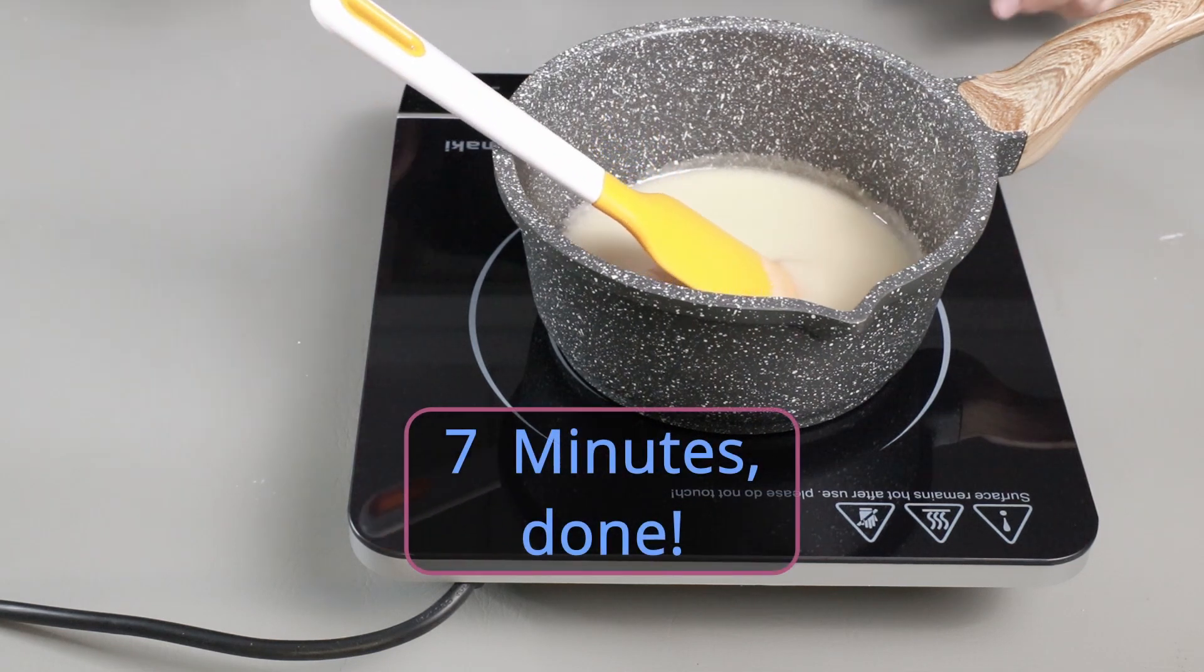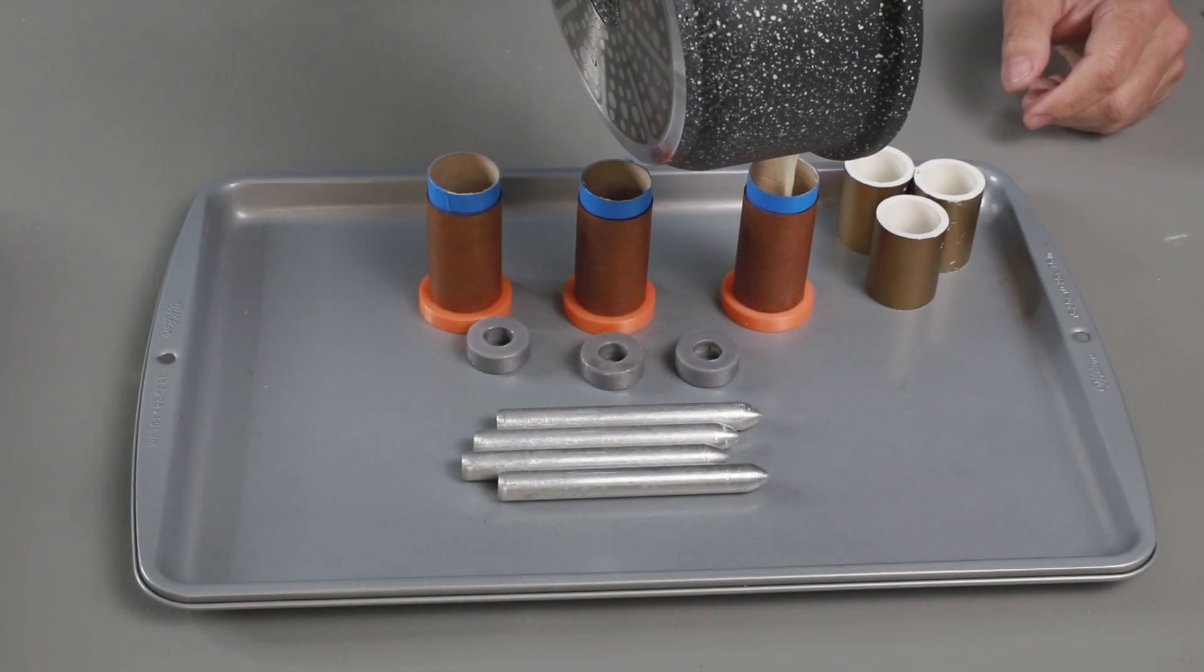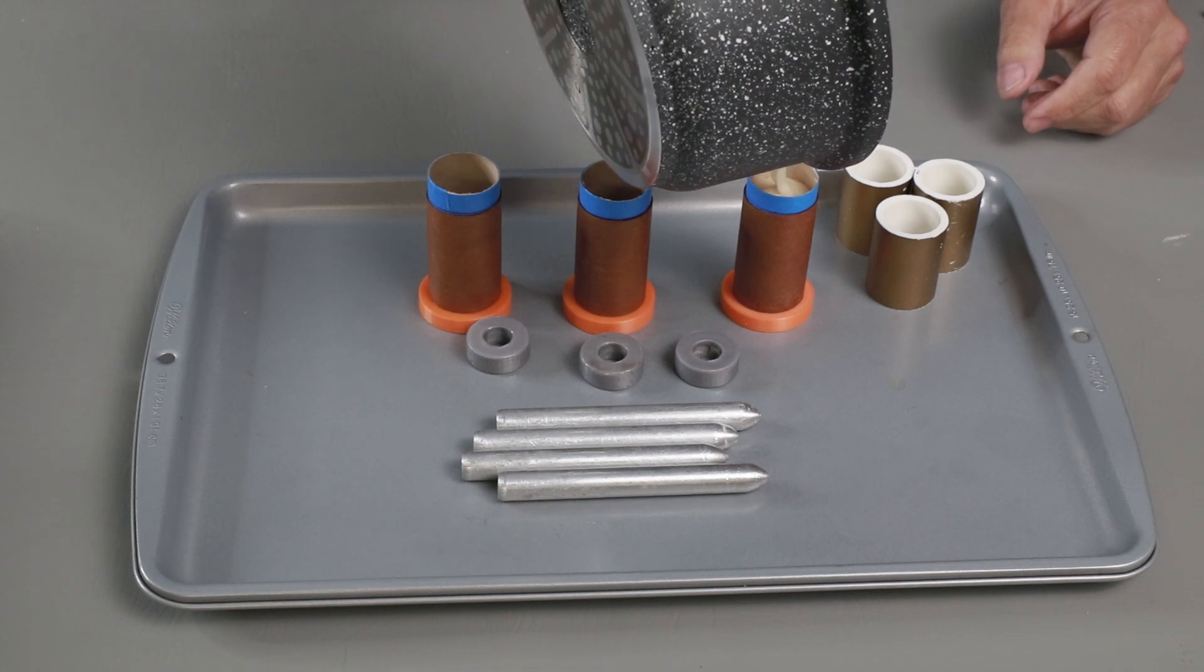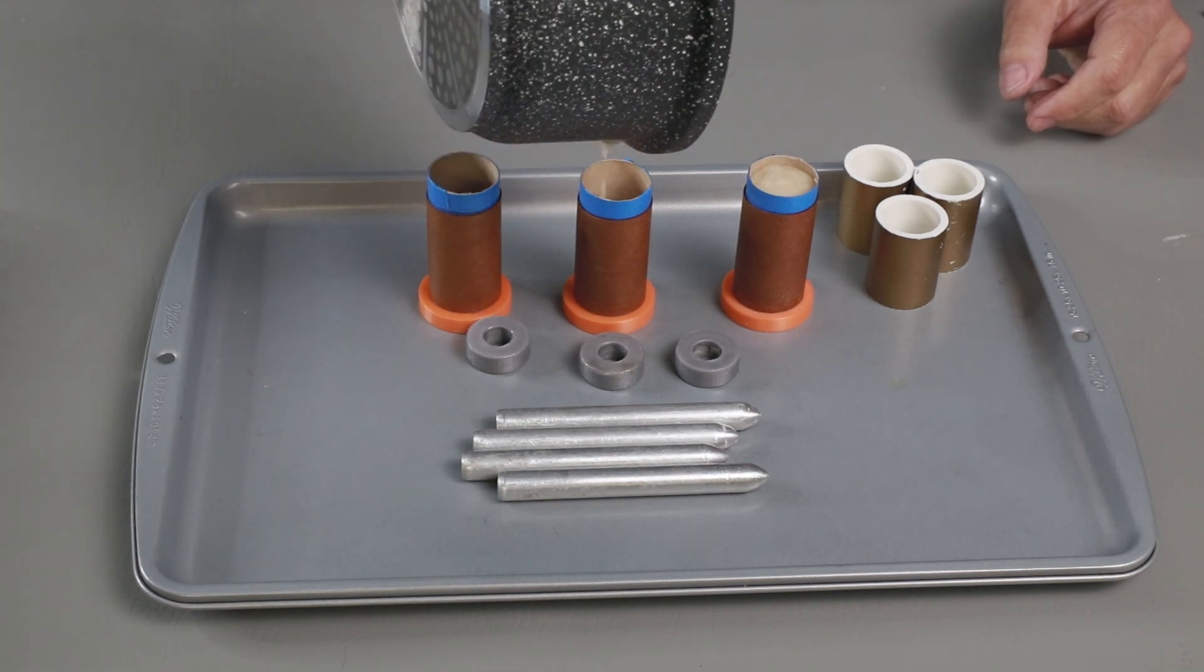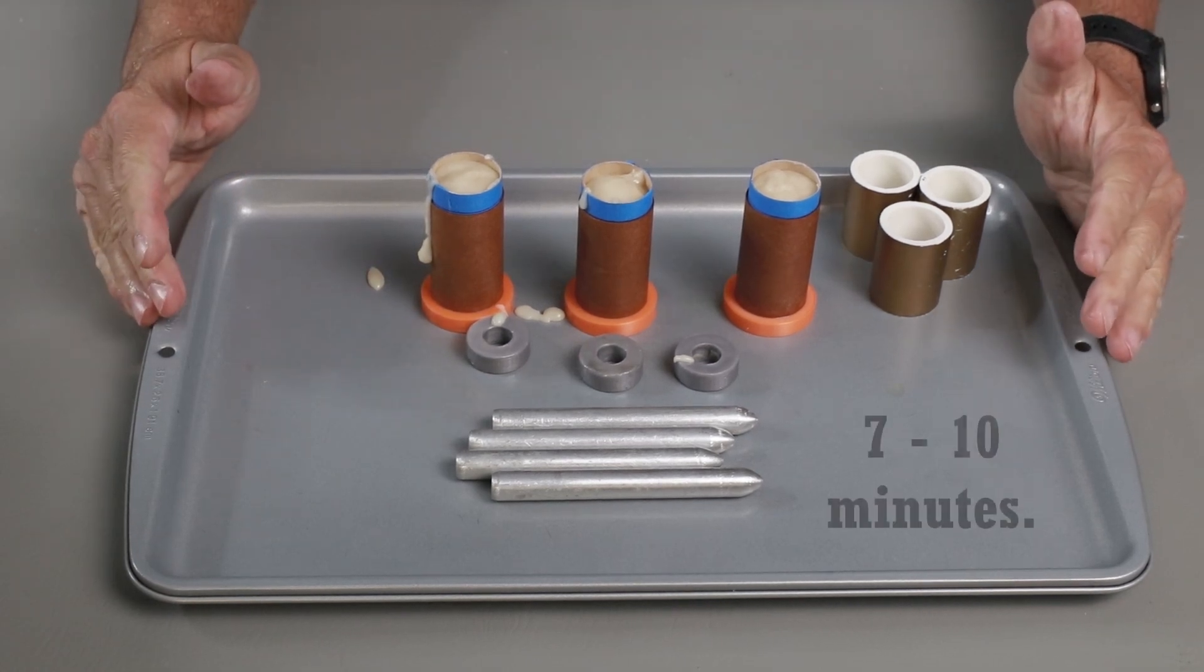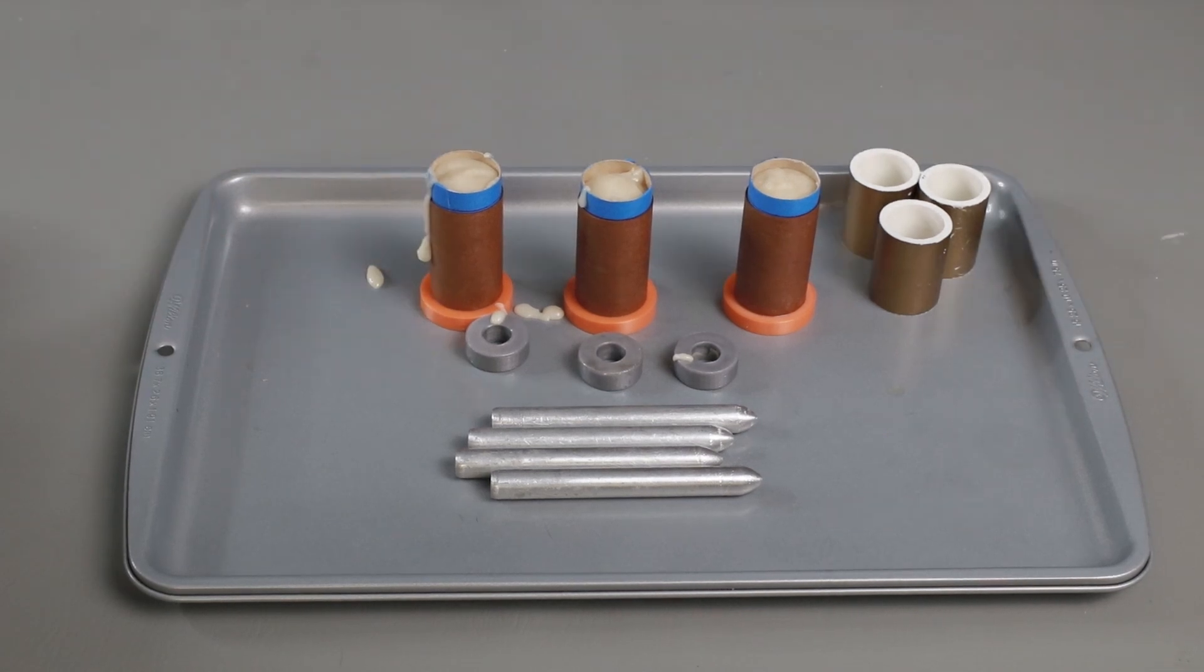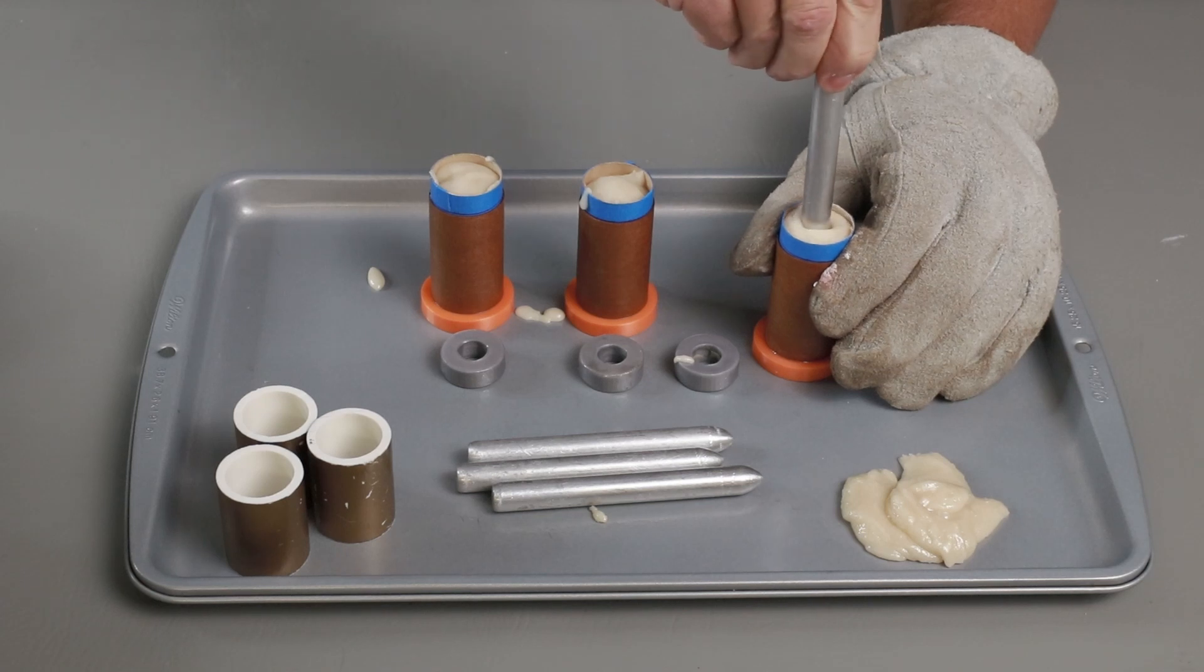There, that should be good. I'm going to turn off the plate, set it aside. Now I'm going to let it sit about 10 minutes and let the propellant firm up a little bit before I push the coring tools in. Now it's time to push the coring tool all the way to the bottom.